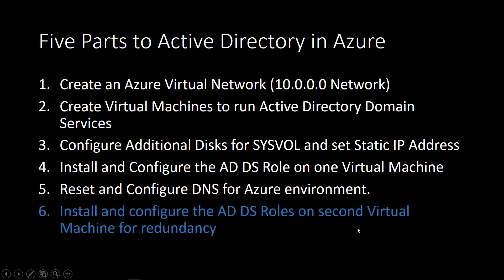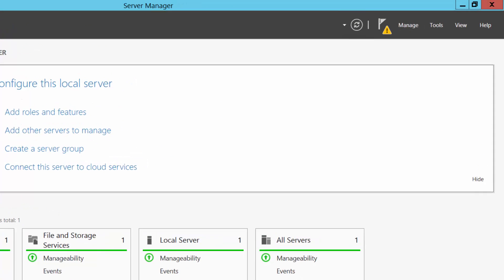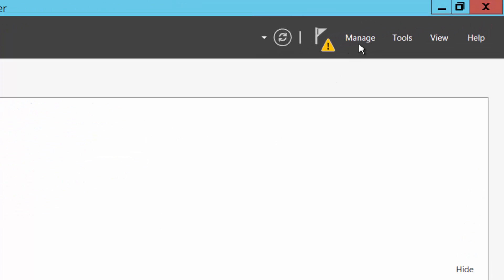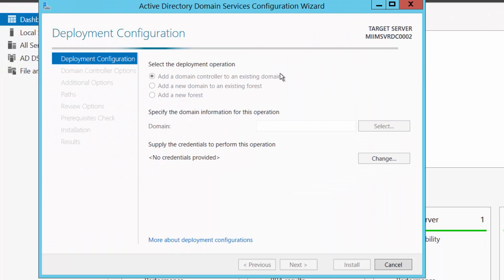Here's where we're at. I've gone ahead and taken the liberty of installing the ADDS role just like we did in step four. So if you need a refresher on that, go ahead and review step four. I've installed the role and I'm ready to promote it, so I'm going to go ahead and choose 'Promote this server as a domain controller.'